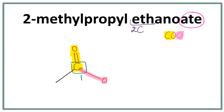Now let's work on the side chain, which is 2-methylpropyl. This 'propyl' here tells us that there are three carbons in the side chain. And the side chain always attaches with the oxygen in the functional group.